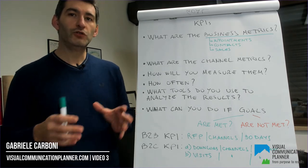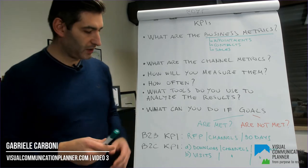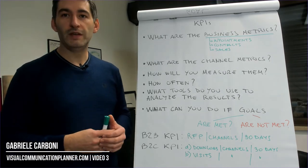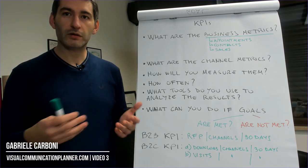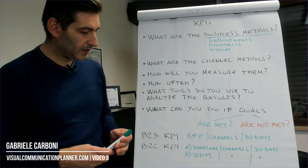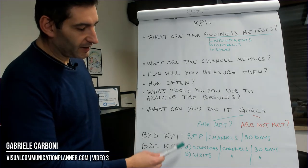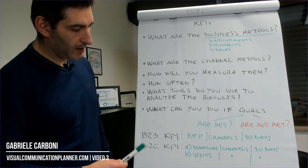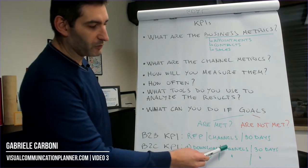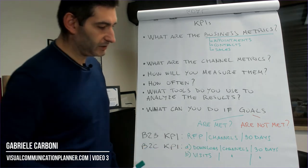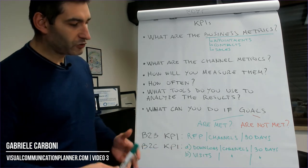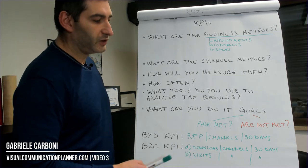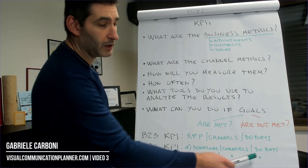A more consumer-focused example could be: Goal — downloads of the app on the App Store or the website. We can divide the KPI in two. KPI A: the number of downloads from specific channels in 30 days. We can also track the visits to our website from specific channels in 30 days.